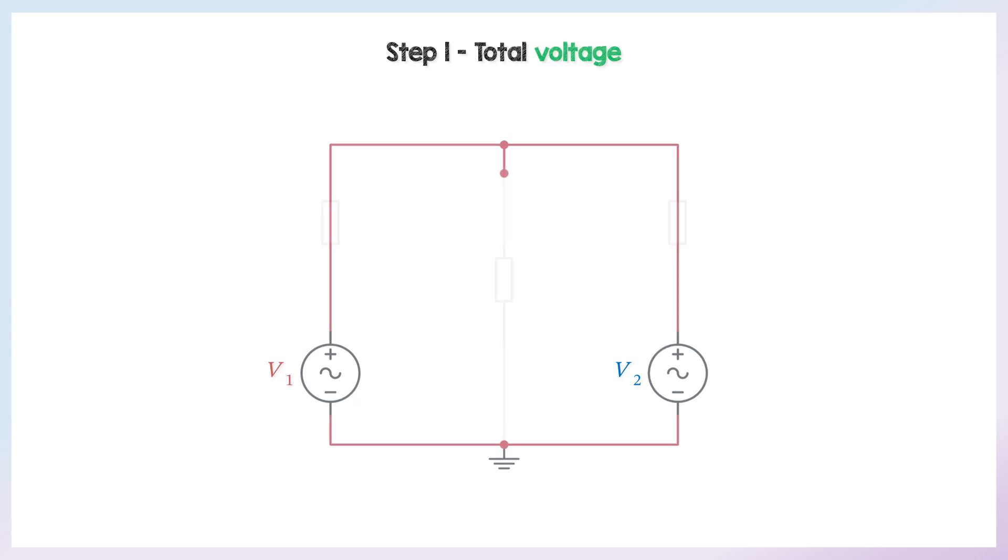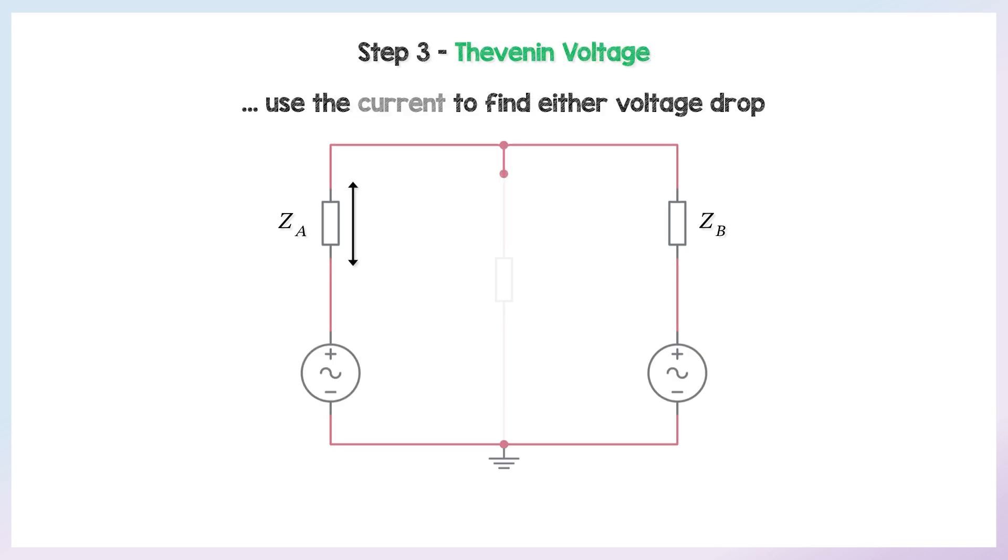Step one is to find the total voltage with the load removed. Step two is to find the total current under no load conditions, where basically these two impedances are in series. Step three is to find the Thevenin voltage. We can use the current to find either of these voltage drops and then add or subtract them to one of the voltages to find the Thevenin voltage.